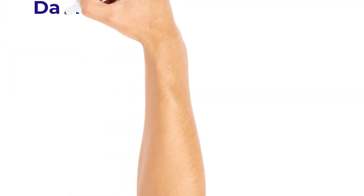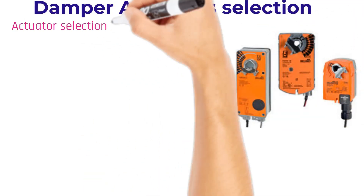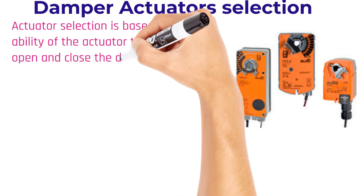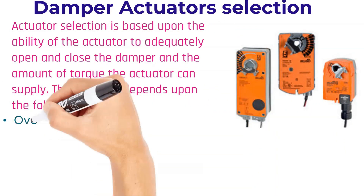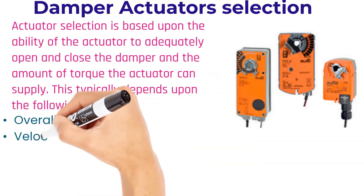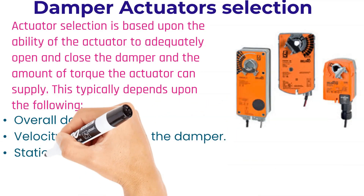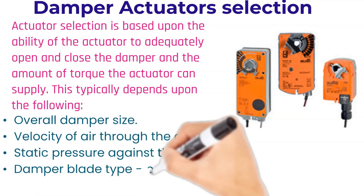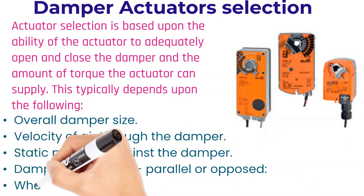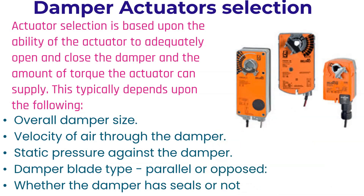Actuator selection is based upon the ability of the actuator to adequately open and close the damper and the amount of torque the actuator can supply. This typically depends upon the following: overall damper size, velocity of air through the damper, static pressure against the damper, damper blade type — whether parallel or opposed — and whether the damper has seals or not.